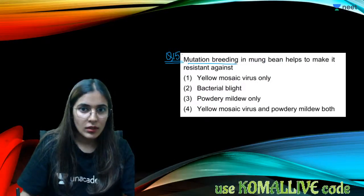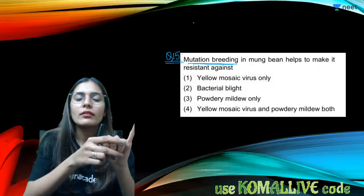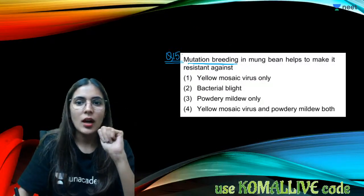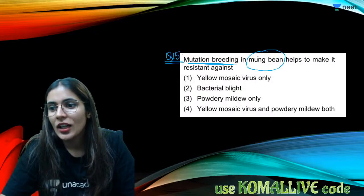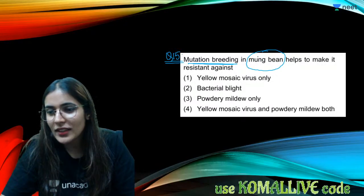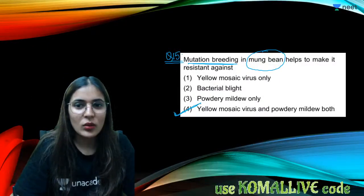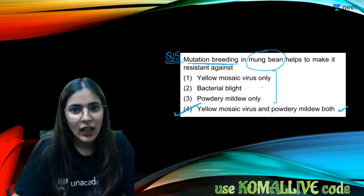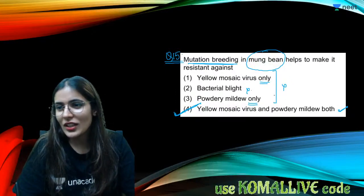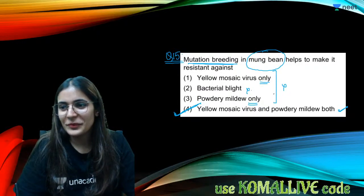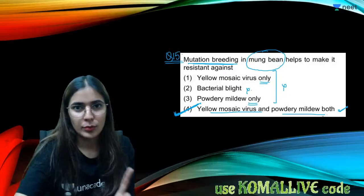Question fifteen: mutational breeding was done in Moong bean. Mutations were induced to get resistance against yellow mosaic virus and powdery mildew — both. The answer is not 'only' one — both resistances were developed through mutational breeding. Options stating only one pathogen are incorrect.